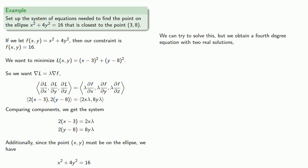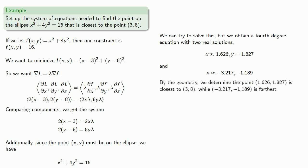Now, we can try to solve this, but if we do that, we actually obtain a fourth degree equation where there are two real solutions. And by the geometry, if you consider what this ellipse looks like and where that point is, it's easy to see that the point 1.626, 1.827 is closest to 3, 8, while the other point is farthest.